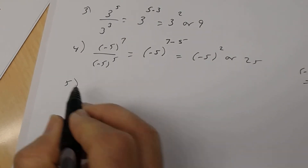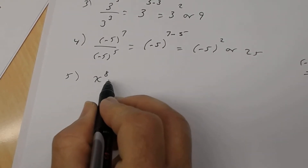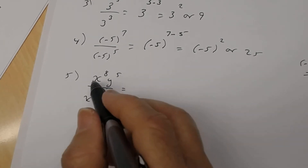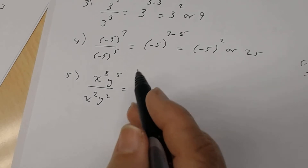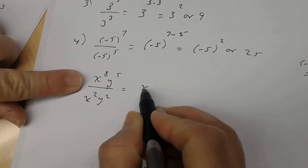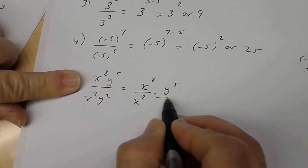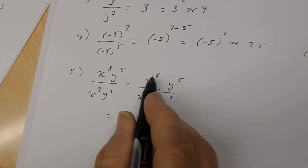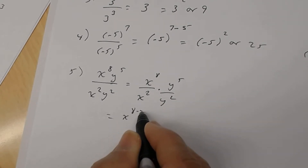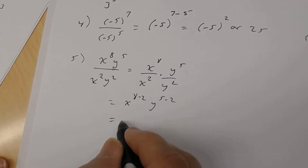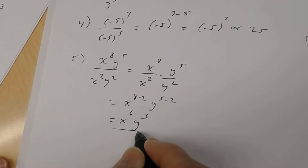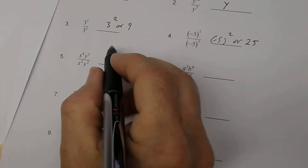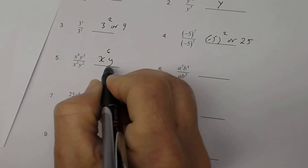Number 5: you have x to the 8th times y to the 5th divided by x squared times y squared. Since there are multiple variables, I would write separate fractions with like bases: x to the 8th divided by x squared, times y to the 5th divided by y squared. Then apply the quotient rule on each — x to the 8th subtract 2, y to the 5th subtract 2 — so the answer is x to the 6th times y to the 3rd.